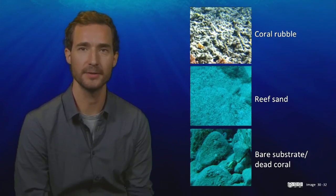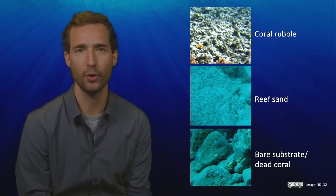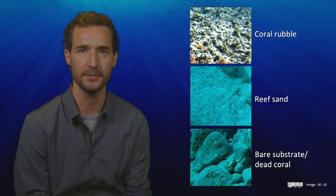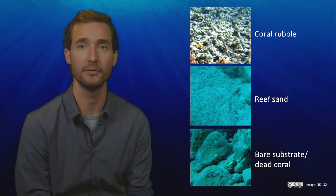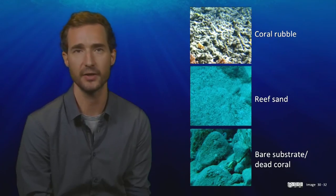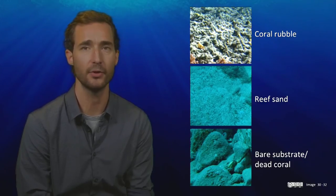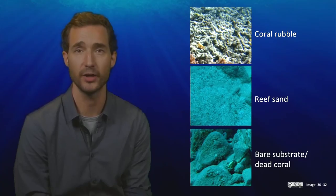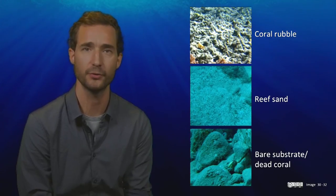Finally we have the abiotic substrate classes. These are pretty self-explanatory, but make sure you take a good look at the images. Rubble is old bits of coral that have broken off and are now lying on the seabed. Most rubble is made from branching or digitate corals, which can break easily as a result of storms. As we discussed in week three, reef sand is made of calcium carbonate and comes from a wide variety of sources, such as shells of tiny plankton or eroded from the substrate by grazers like sea urchins or parrotfish. The third abiotic substrate class is simply bare substrate or coral rock. In reality, this is rarely completely bare and is usually covered in a fine layer of turf algae, which is an important food source for many reef grazers.